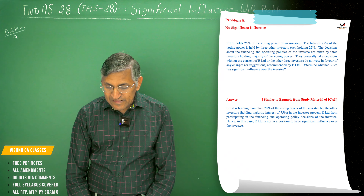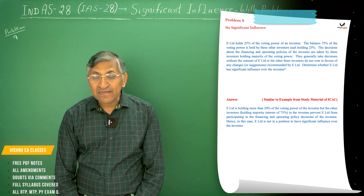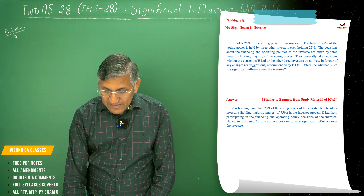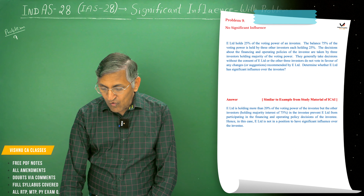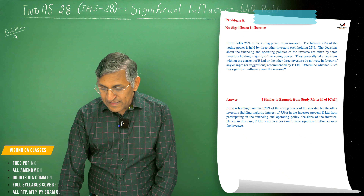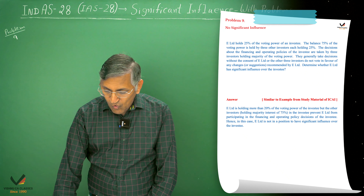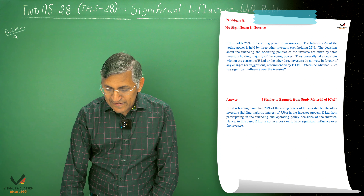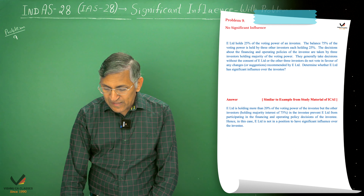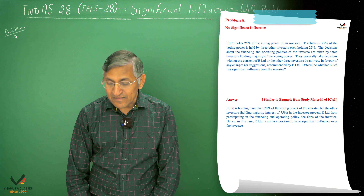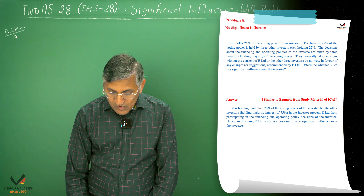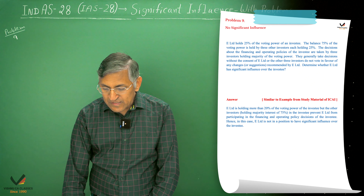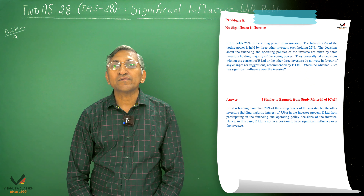What do we have to do with the financial decision? The 3 investors generally take decisions without the concern of Illimitally. The investors do not act in favor of any changes or suggestions recommended by Illimitally. We need to determine whether Illimitally has significant influence over the investee or not.